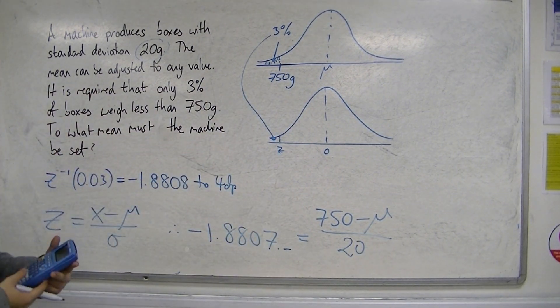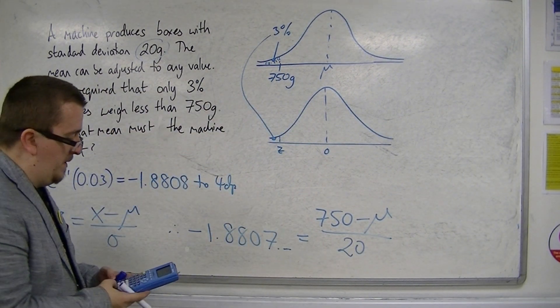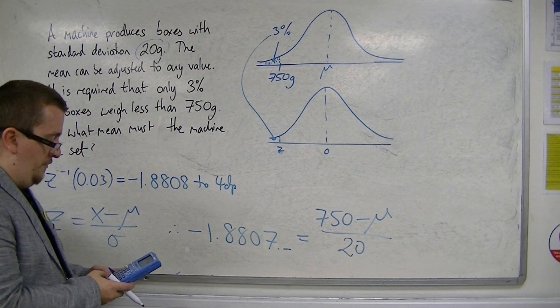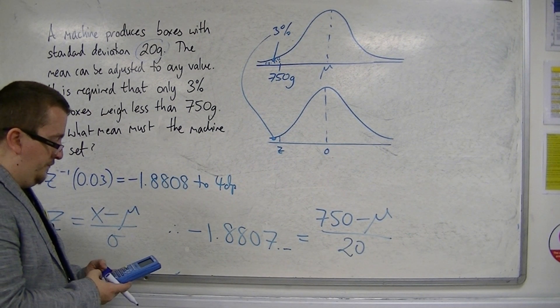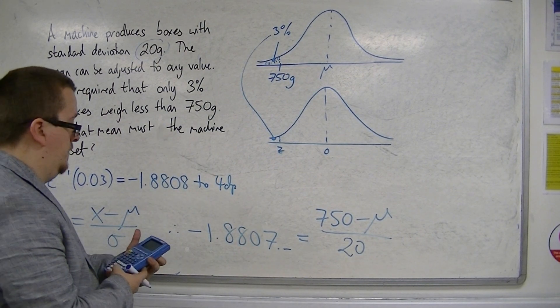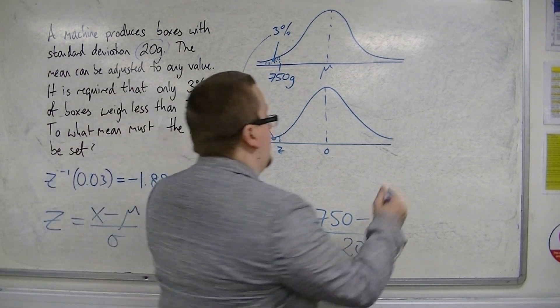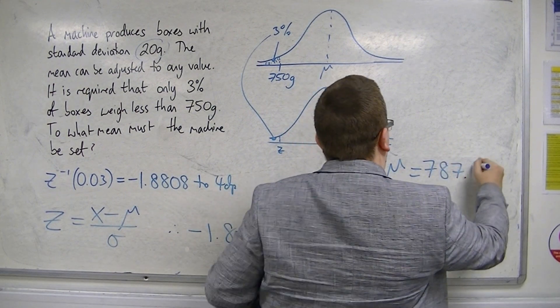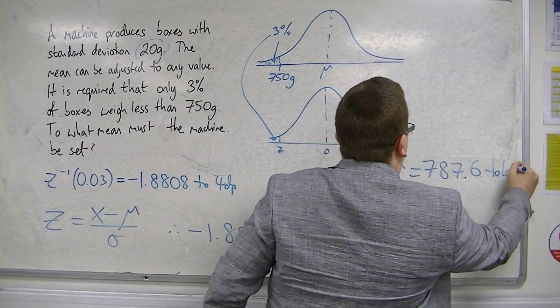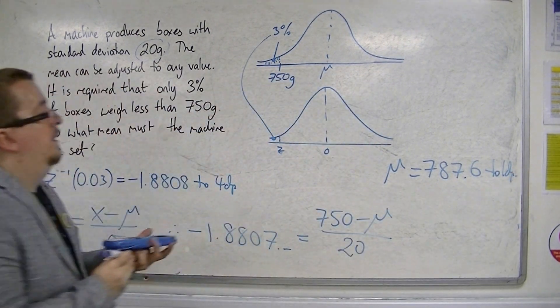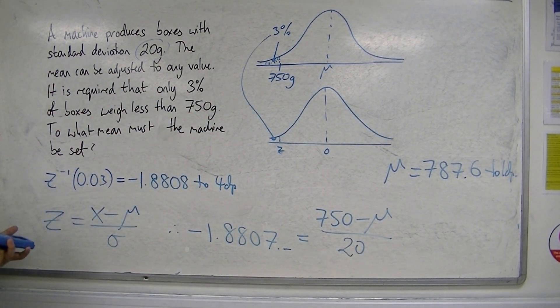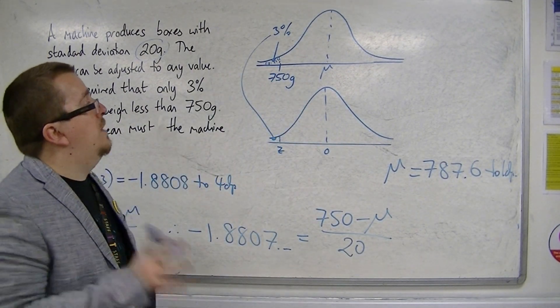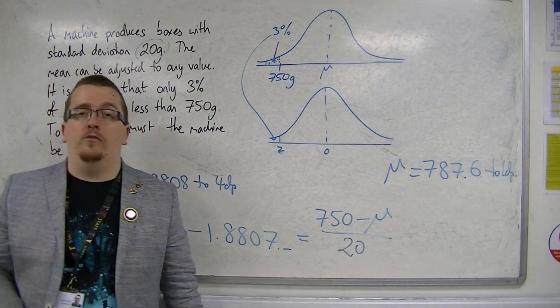I've rearranged this formula to get the mean. So times by 20, and then I'm going to take it away from 750. Which means my mean must be set to 787.6 to one decimal place. So 787.6 grams. And that will mean that only 3% will be less than 750 grams.